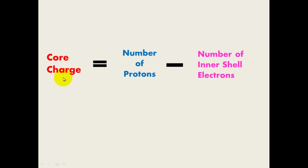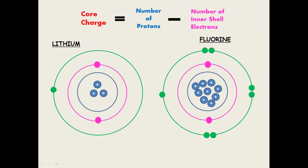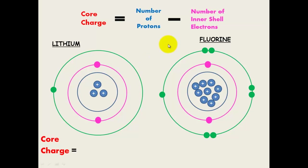These positive protons pull the electron shell in closer, giving a smaller atomic radius. We can work this out using core charge, where core charge equals the number of protons minus the number of inner shell electrons. For lithium: 3 protons minus 2 inner shell electrons gives a core charge of 1.